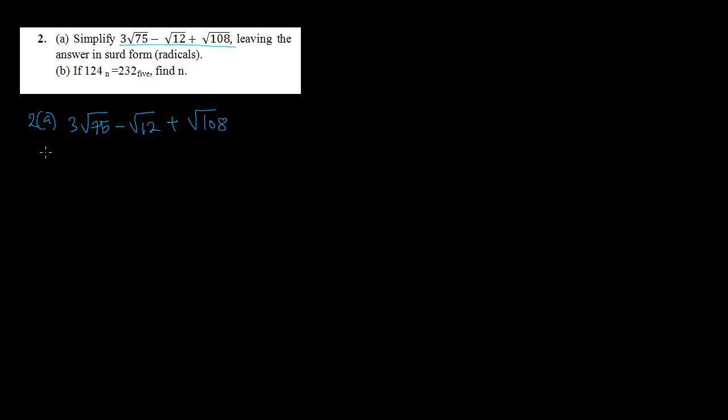When you're given this type of question in exams, what you do first is try to look for a particular number that could go into 75, 12, and 108. If you check carefully, you notice 3 can go into 75, 3 can go into 12, and 3 can also go into 108. So we split each term: 3√(3×25), minus √(3×4), plus √(3×36) — since 3×25=75, 3×4=12, and 3×36=108.